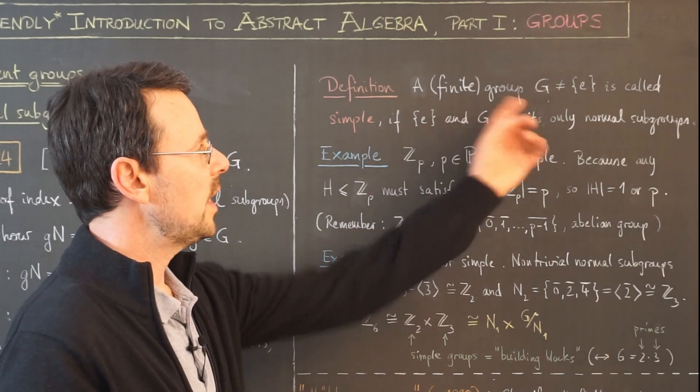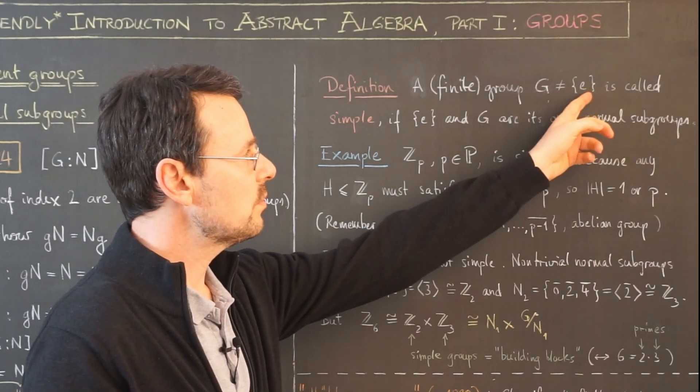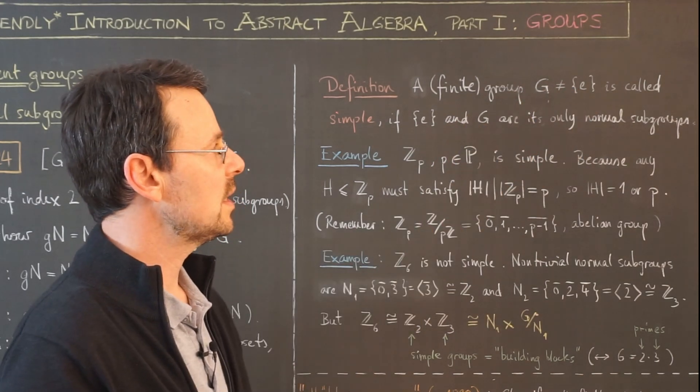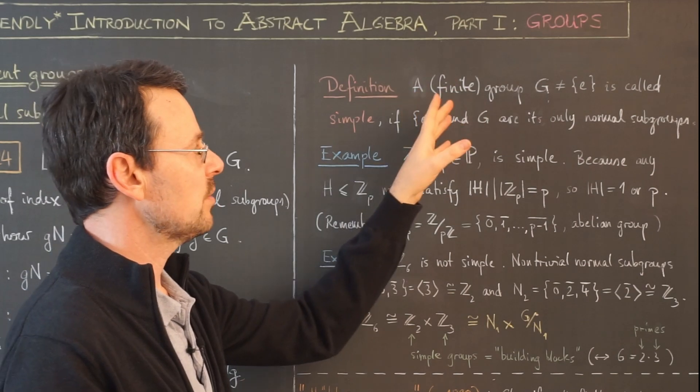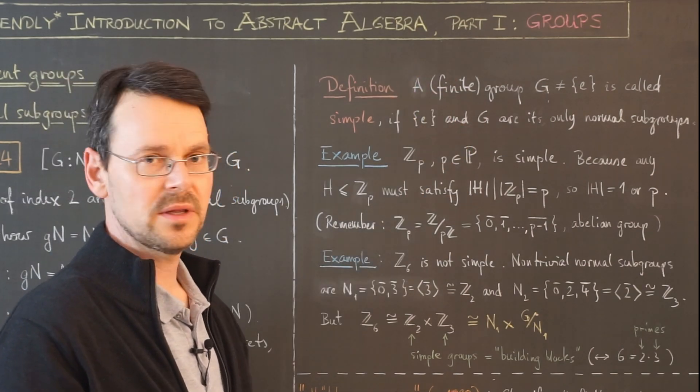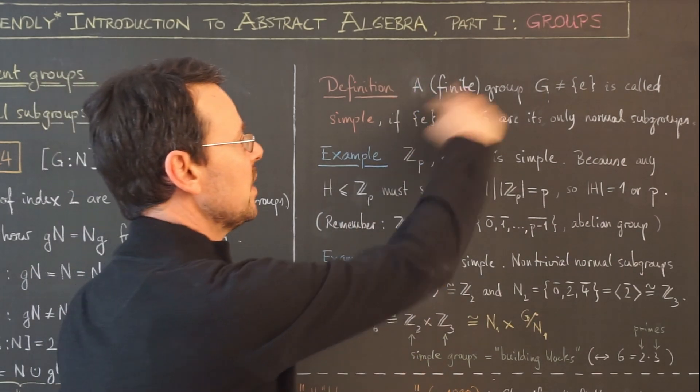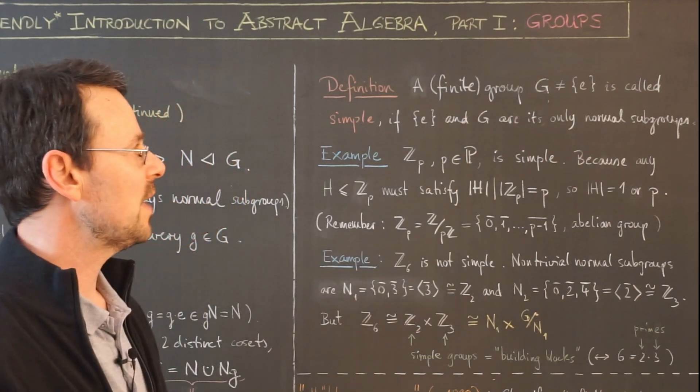So we consider any group that is not the trivial group, meaning that it has at least two elements. Whether it's finite or not doesn't actually matter. We are only going to consider the finite case, but you might as well cancel the word finite here.